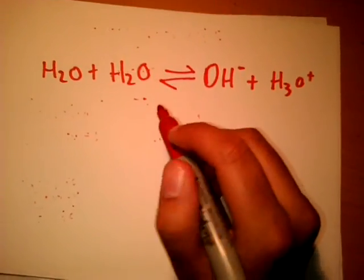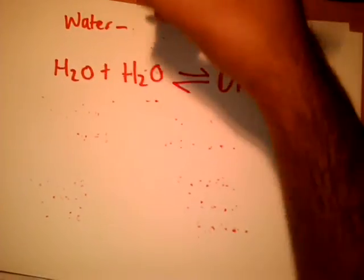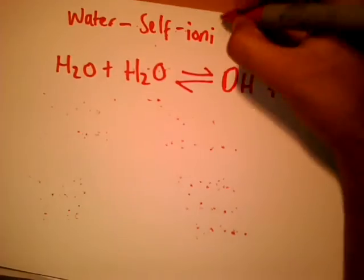Another example can be ammonia when it's in its purest form. This one's water, and this is the self-ionization process because water is ionizing itself.